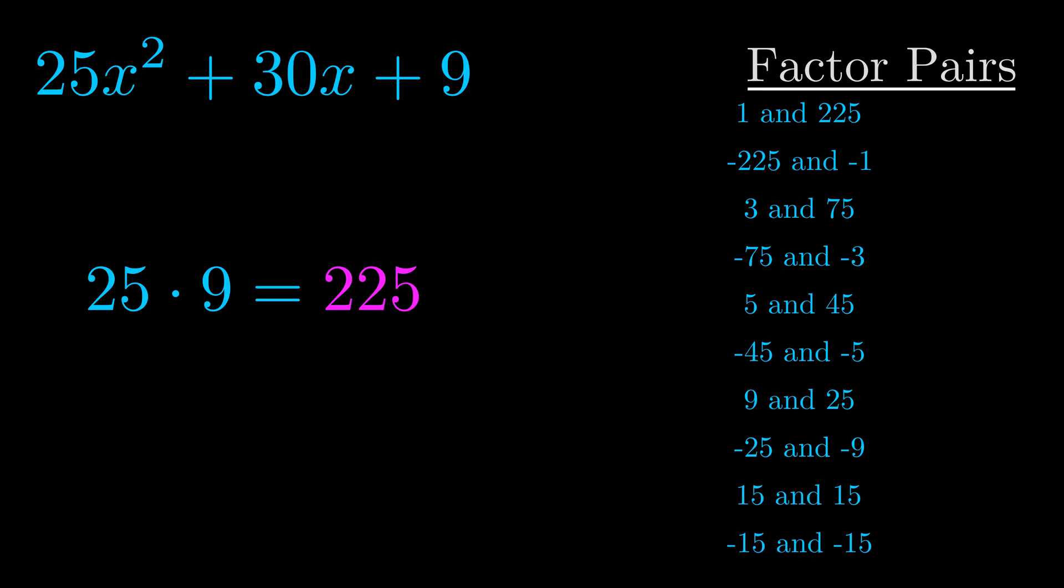The b value is the coefficient on the x term. That's the middle term, the one that we haven't done anything with yet. And really this is the only factor pair that we need.